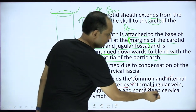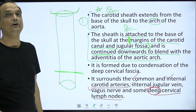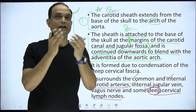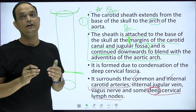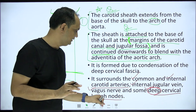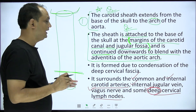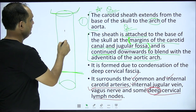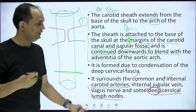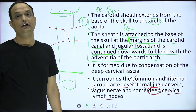Don't forget the deep cervical lymph nodes, because in cases of metastasis — when cancer of the head and neck is suspected to have spread to these deep cervical lymph nodes — the carotid sheath has to be cut to remove these lymph nodes. This is a very important content of the carotid sheath.